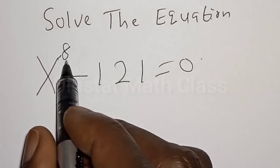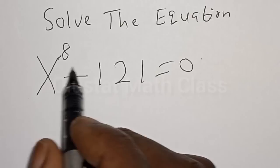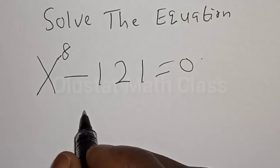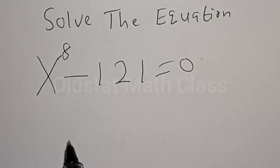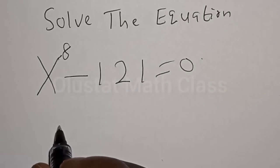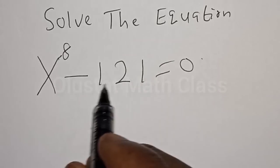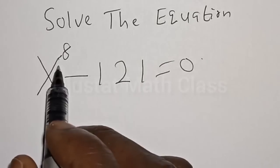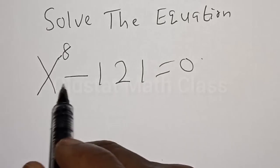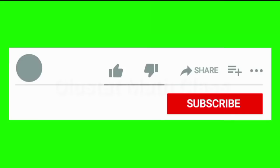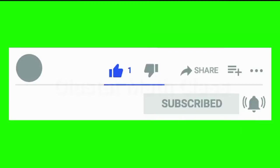Solve the equation s raised to power 8 minus 121 is equal to 0. Hi everyone, welcome to my class, the Olusta class. In this class we quickly want to find the value of s from this given equation: s raised to power 8 minus 121 is equal to 0. But before we proceed, please don't forget to like, share, comment and subscribe. Thank you.